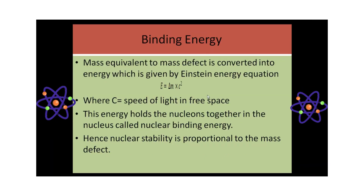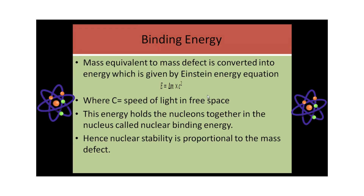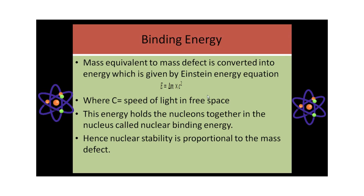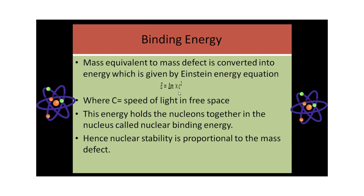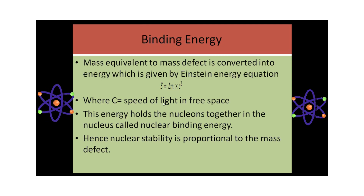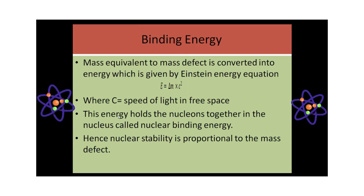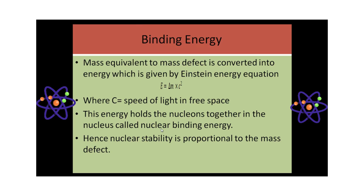In our last slide, we studied mass defect. The mass equivalent to mass defect is converted into energy. Observed mass is always less than the calculated mass, and that mass is released in the form of energy. This energy is given by Einstein's equation E equals mc squared. Here, E equals delta m — the mass defect — times c squared, where c is the speed of light in free space. This energy holds the nucleons of the nucleus together, and is therefore called nuclear binding energy. Hence, nuclear stability is directly proportional to the mass defect.